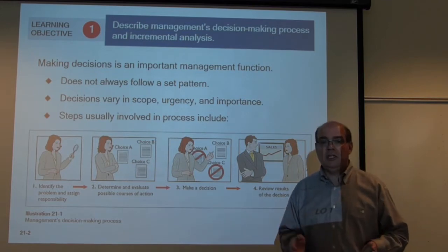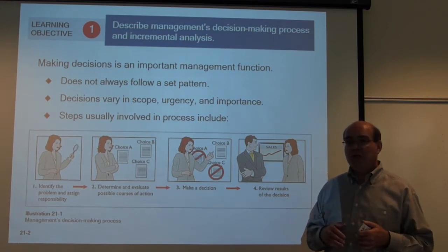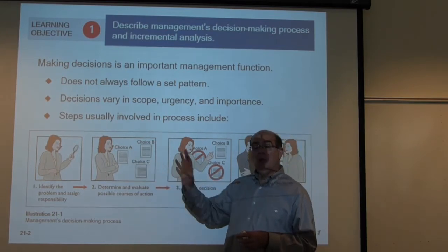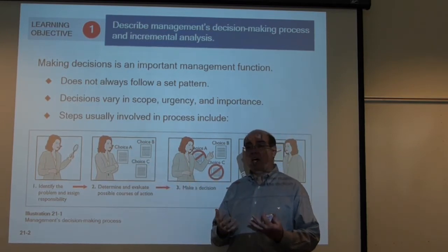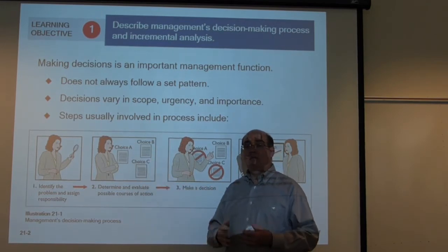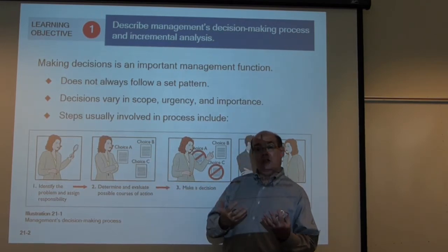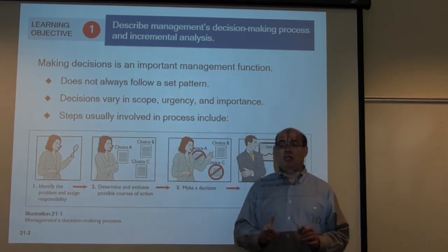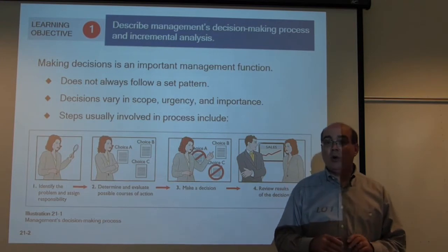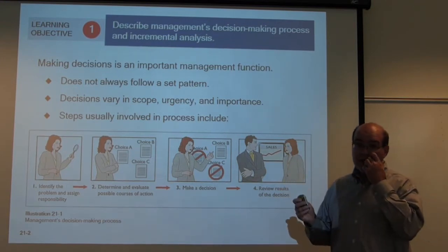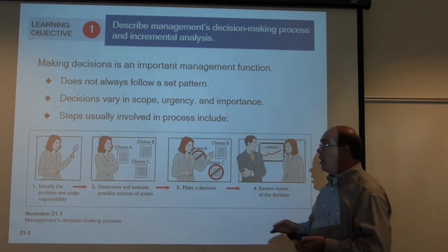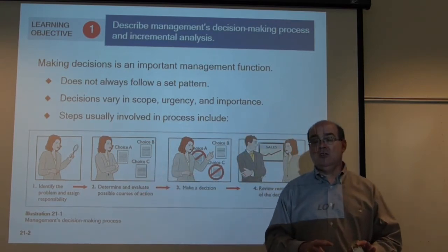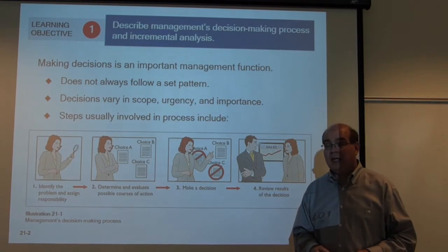So why does this all have to do with accounting? The role of this chapter and management accounting in general is to help managers make better choices by looking at the quantitative or number side of the different alternatives and letting people see what the financial impact to net income will be for the different choices. It's just one piece of the information managers need, but it is an important component. We'll be comparing two different choices and seeing the impact on profitability.